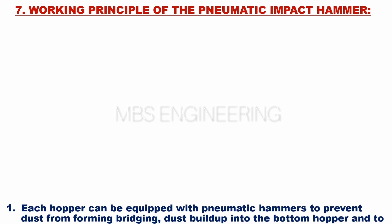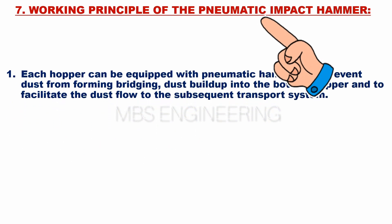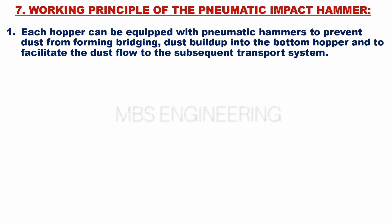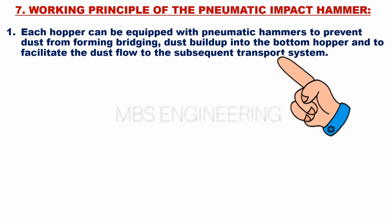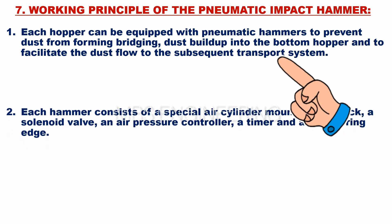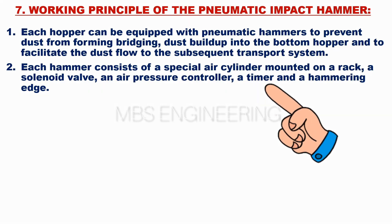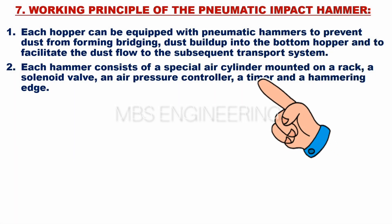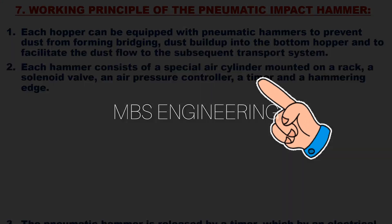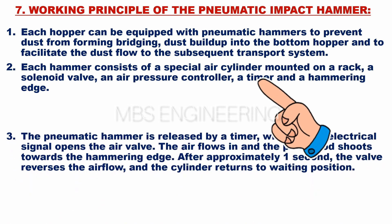The working principle of the pneumatic impact hammering system: each hopper can be equipped with pneumatic hammers to prevent dust from forming bridges, reduce dust buildup at the bottom hopper, and to facilitate dust flow to the subsequent transport system. Each hammer consists of a special air cylinder mounted on a rack, a solenoid valve, an air pressure controller, a timer, and a hammering edge.